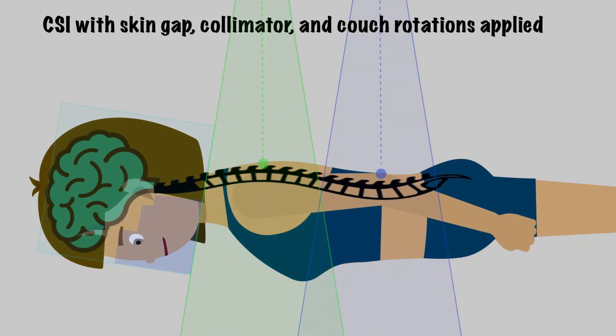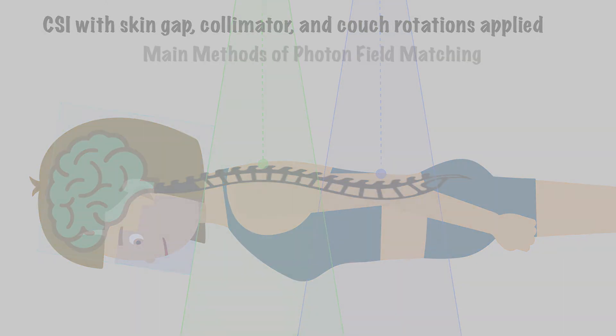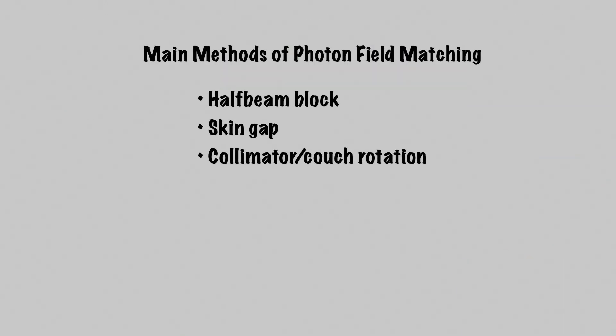And there we have it, treatment of the full cranial spinal axis without creating unsafe hot spots. If we move the match point of the spinal fields by feathering, we could also avoid unsafe cold spots. So there you have it, the various ways to match abutting photon fields. The rule of triangles is a little abstract, so feel free to re-watch until it sinks in.